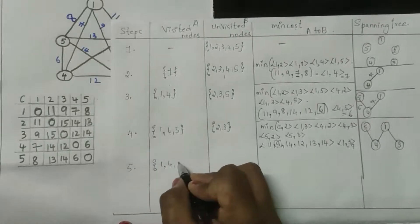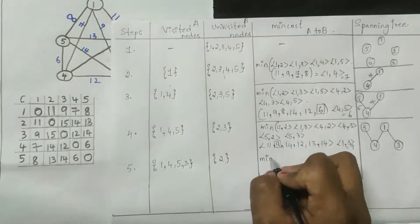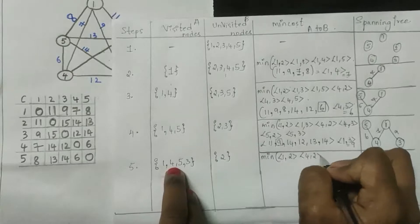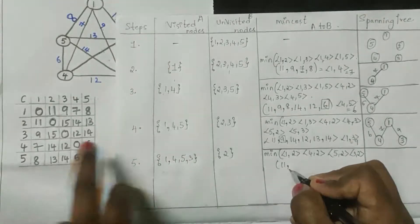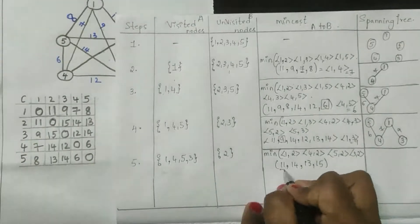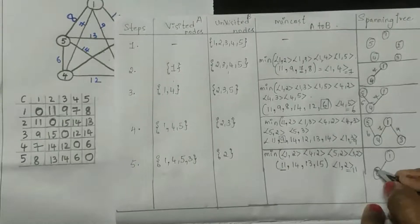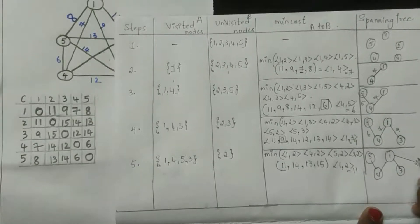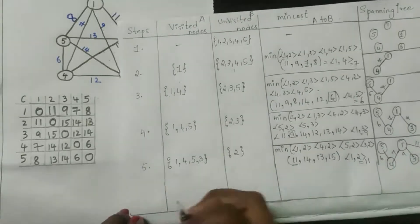In step five, visited nodes are one, four, five, and three; unvisited is only node two. We find the minimum of: one-to-two is 11, four-to-two is 14, five-to-two is 13, three-to-two is 15. The minimum is 11, edge one-to-two. So from node one we connect to node two. The cost for this edge is eleven.